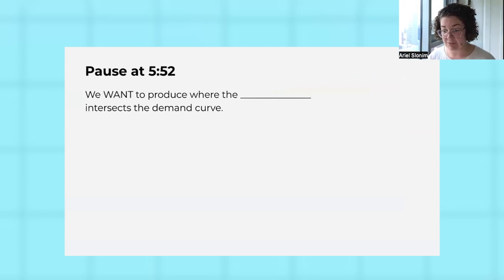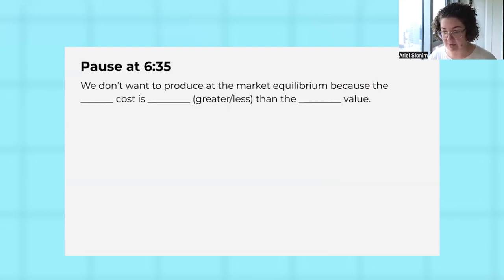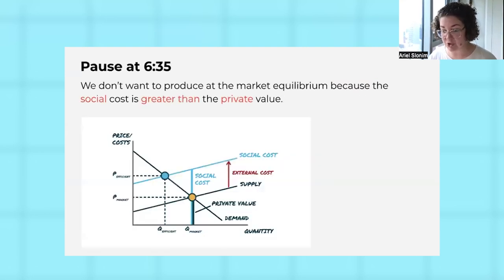We want to produce not at market equilibrium, but at the efficient equilibrium where the social cost curve intersects demand. We're reinforcing some of the graphical analysis that's in the video on the slides, pausing to explain those graphs. We've given students space on their worksheets to draw those graphs. You'll want to make sure that you're really emphasizing that graphical analysis on this day. We don't want to produce where social cost is greater than the private value, where cost exceeds the benefit.